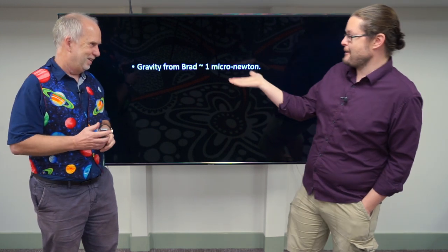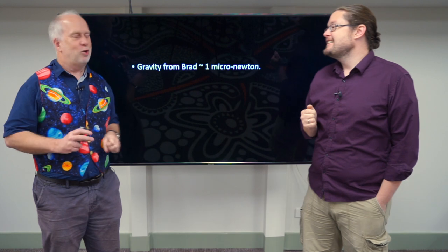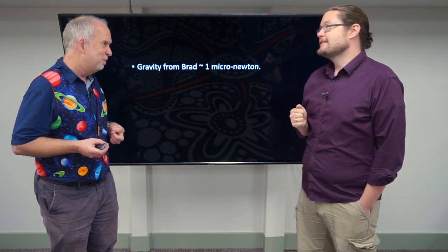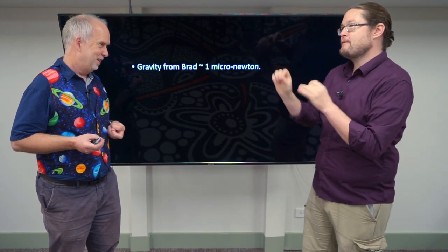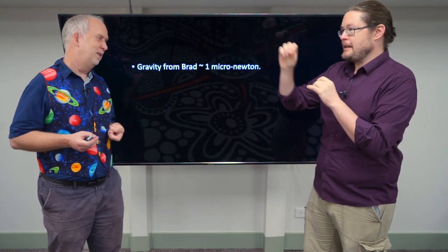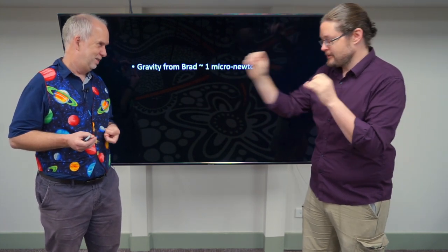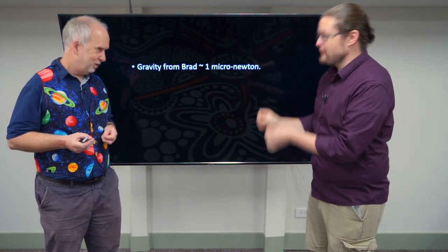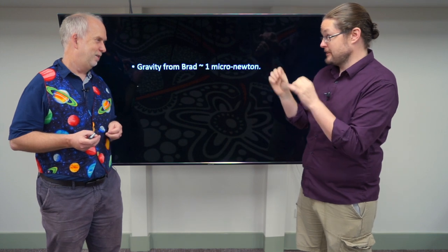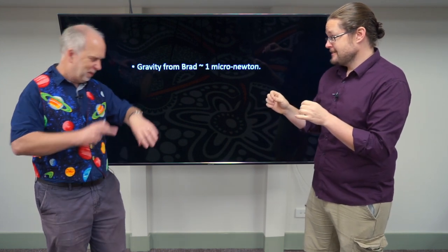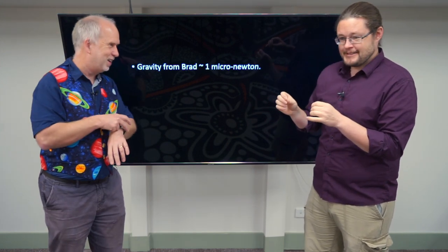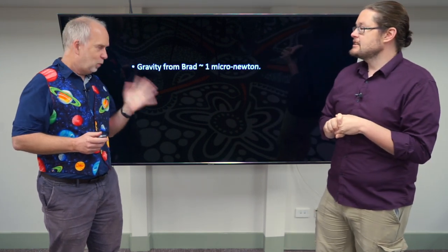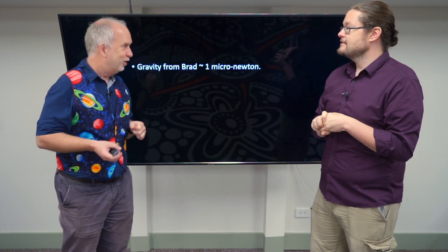That doesn't really seem a lot. A micronewton, to be precise, is about 1/30,000th the weight of a mosquito. So my force on you — being about 100 kilograms and about a meter away — is 1/30,000th that of a mosquito landing on you. That's not a lot. Which is kind of why we don't notice gravity on Earth between everyday objects.